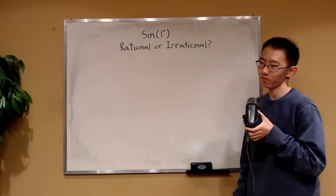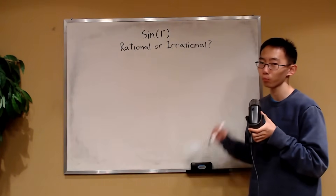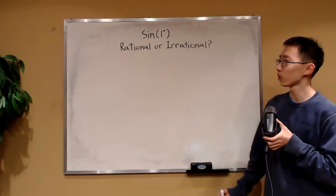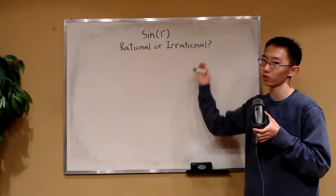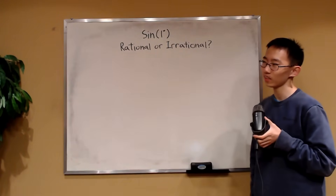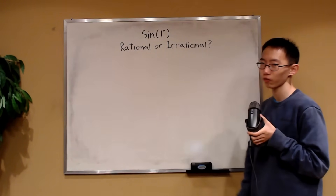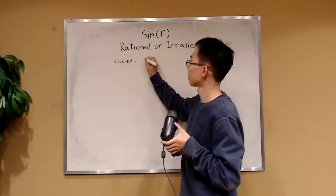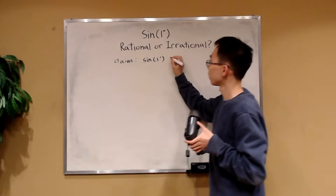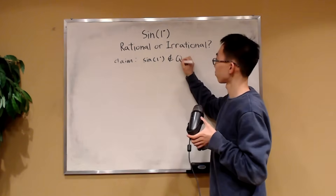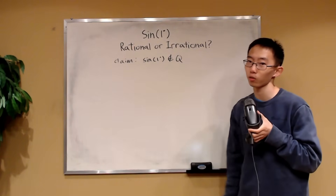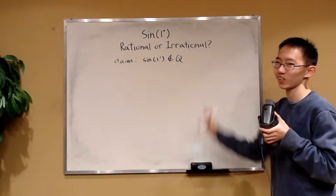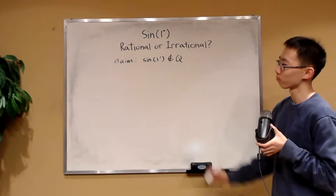It doesn't look like it should be rational. But to formally get an answer, we have to rigorously prove our claim. So how can we show that sine of one degree is rational or irrational? It's usually a good idea to start by following your intuition, so we might want to claim that sine of one degree is not a rational number. This is our claim. How do we prove it?